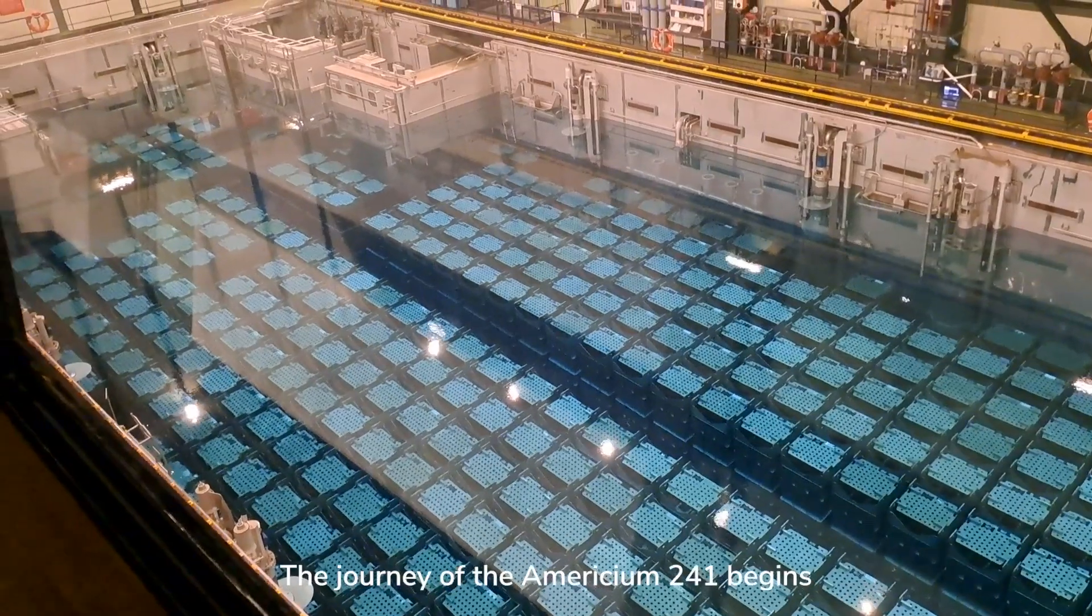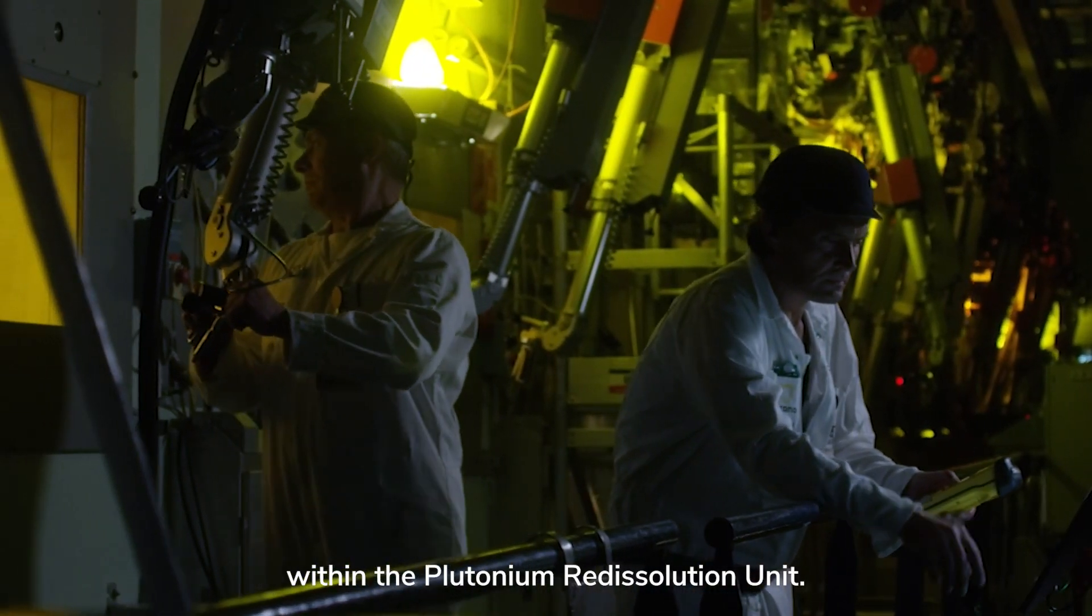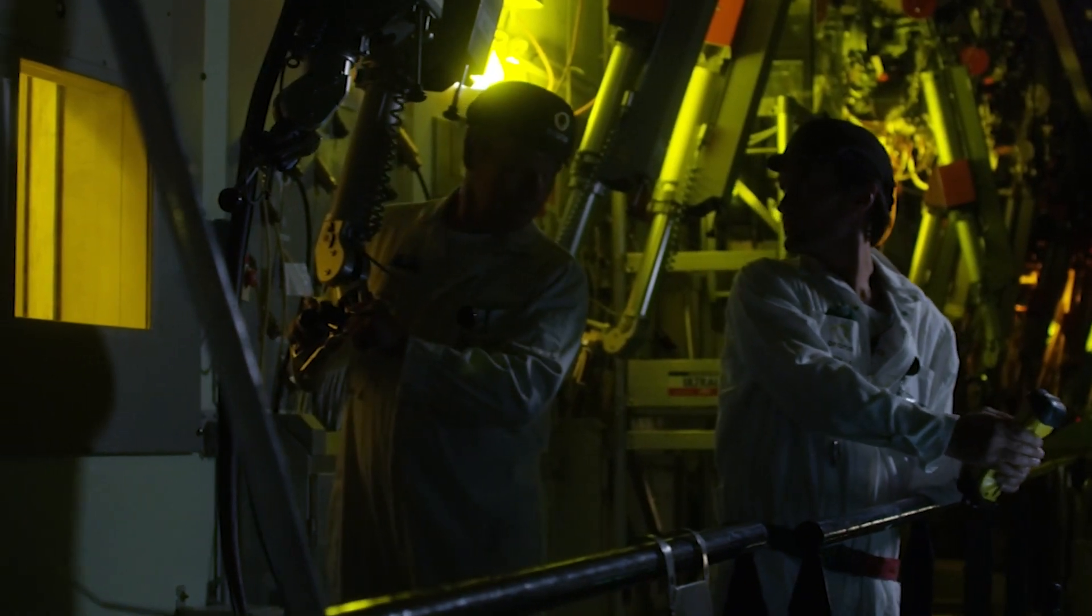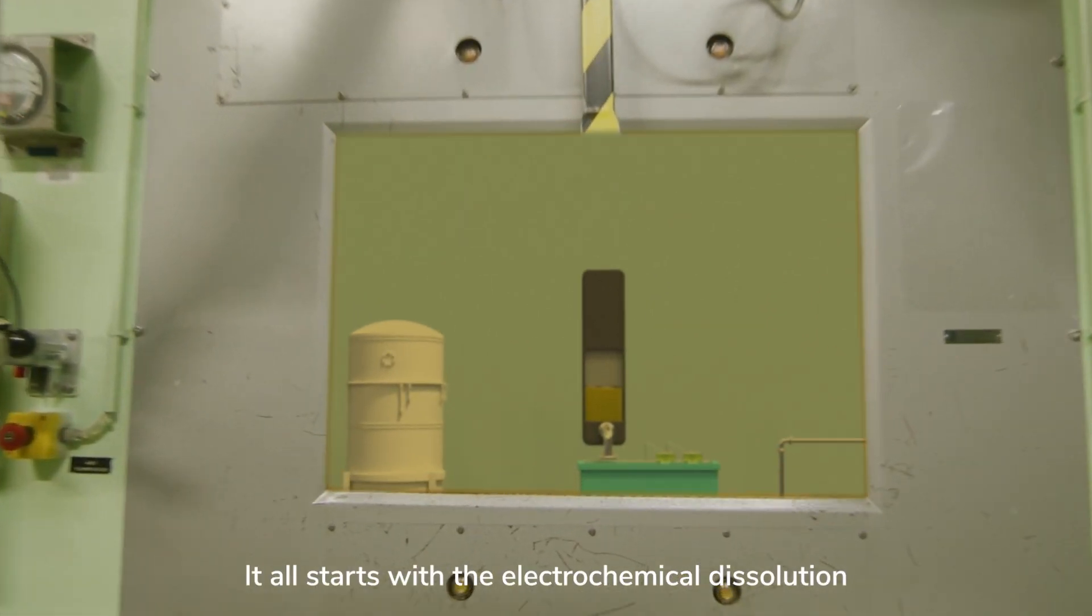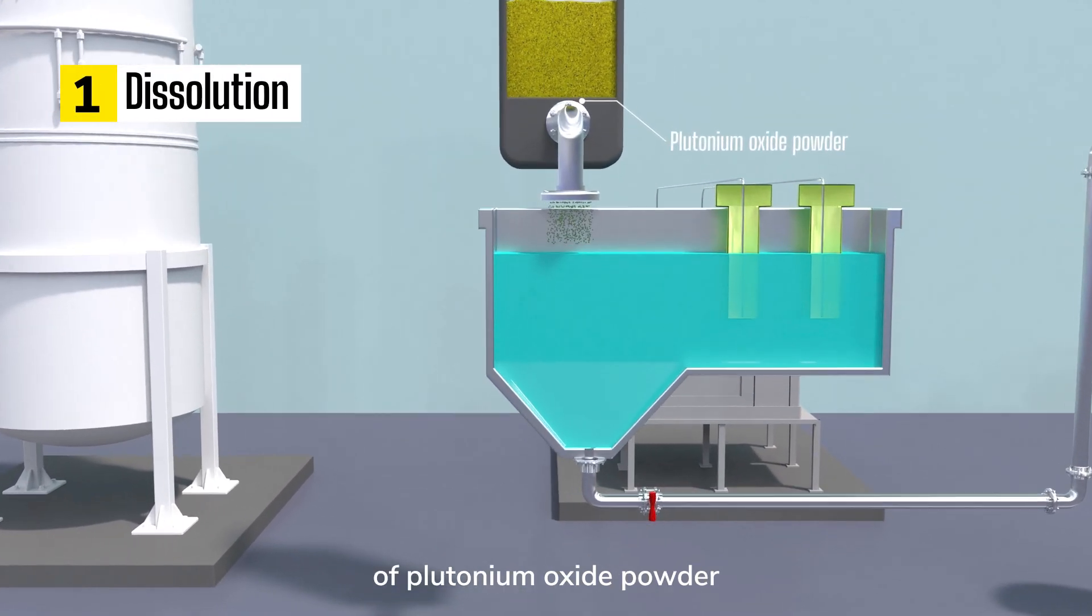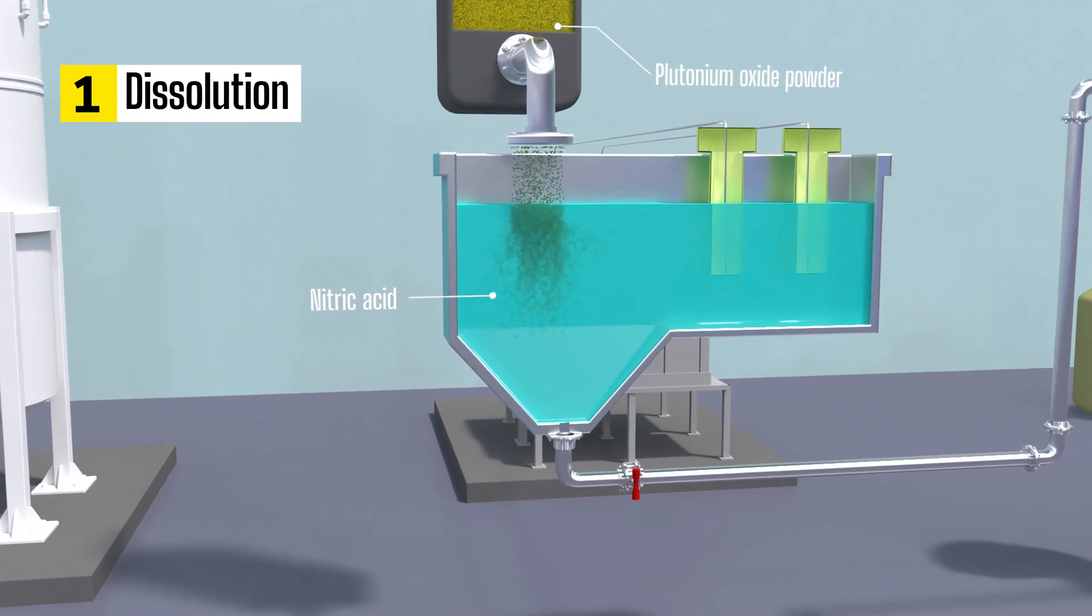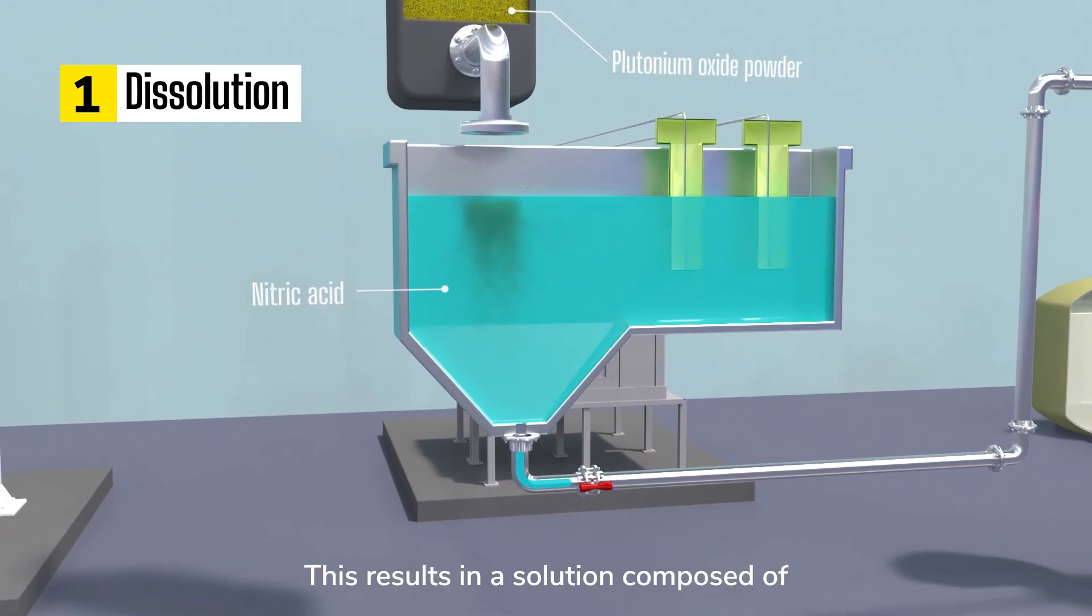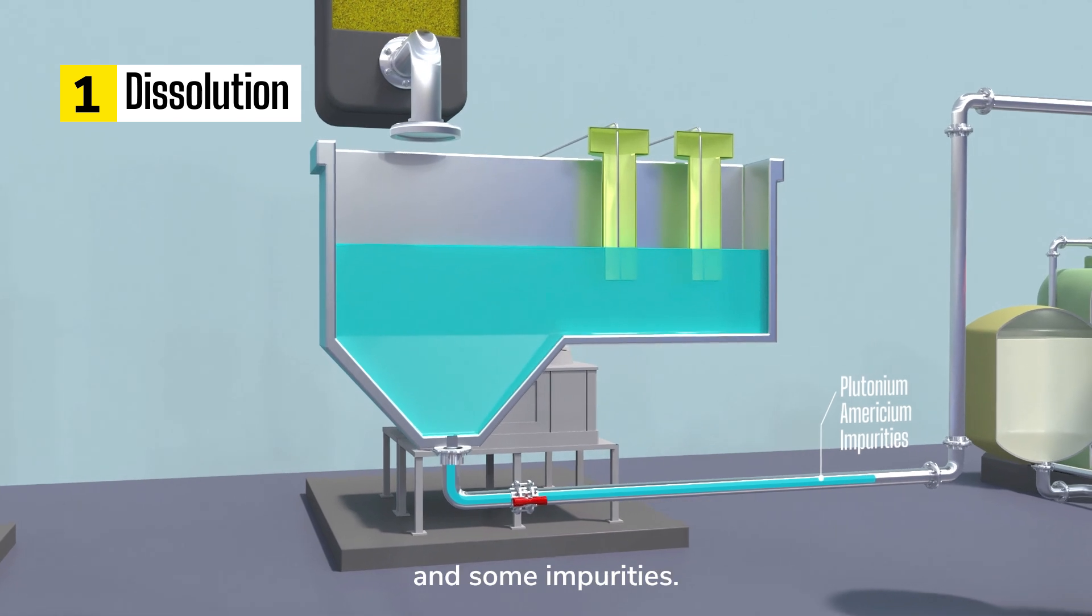The journey of Americium-241 begins within the plutonium redissolution unit. Let's take a closer look. It all starts with the electrochemical dissolution of plutonium oxide powder in a tank filled with nitric acid and a reagent. This results in a solution composed of plutonium, Americium, and some impurities.